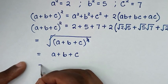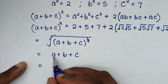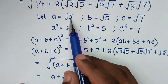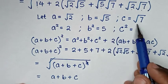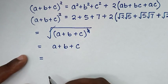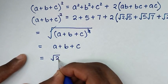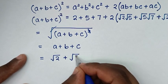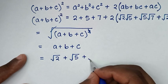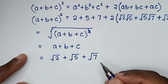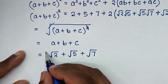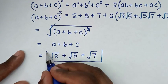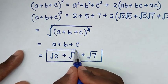Then recalling the values of A, B, and C: A is square root of 2, B is square root of 5, C is square root of 7. So here it will be square root of 2 plus square root of 5 plus square root of 7. Therefore this is the final answer — the simplified form.